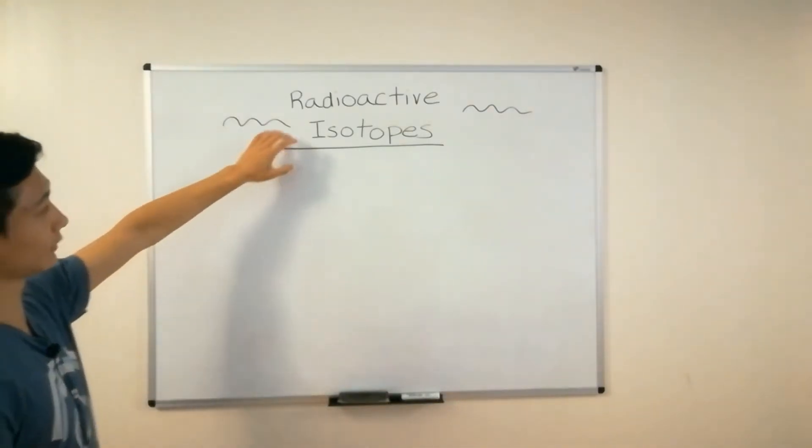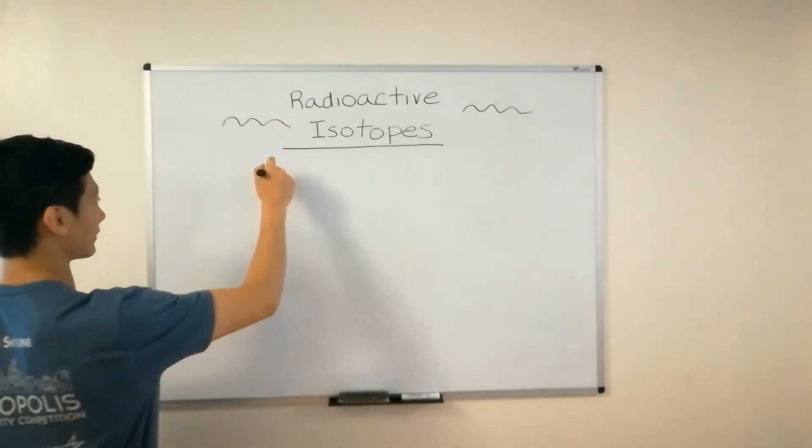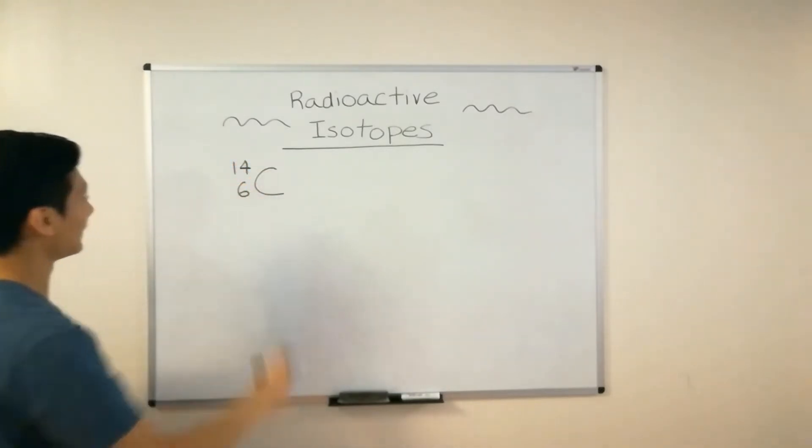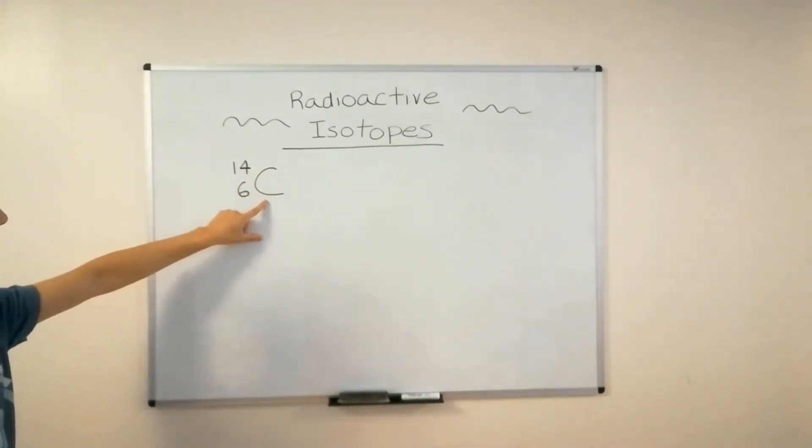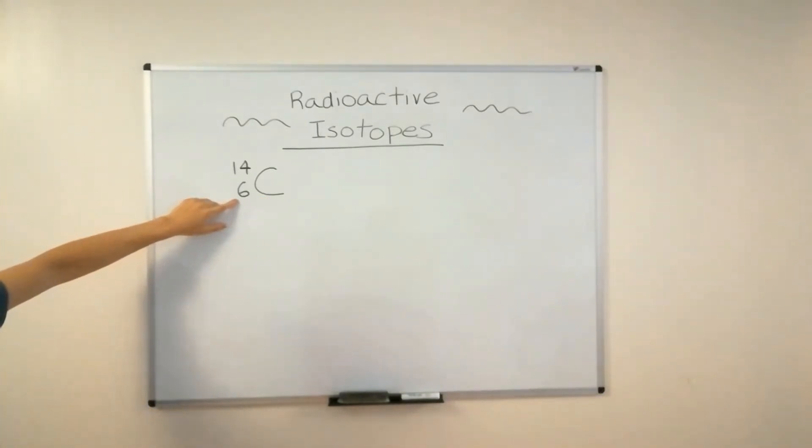So one example of a radioactive isotope is carbon-14. Now, why am I writing like this? Well, carbon, the symbol for carbon is C, and carbon has 6 protons down here. And it has, let's see, 8 neutrons.